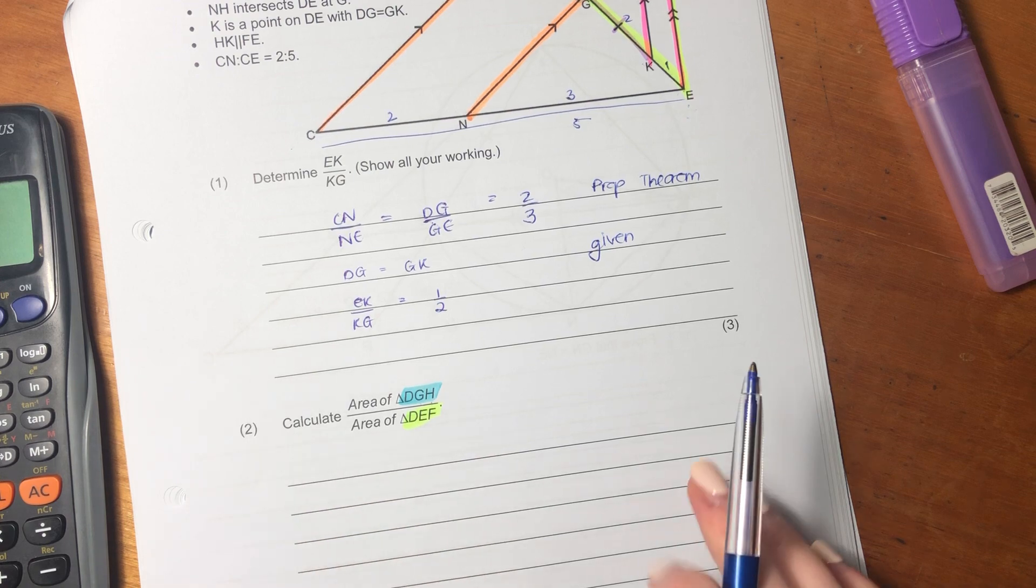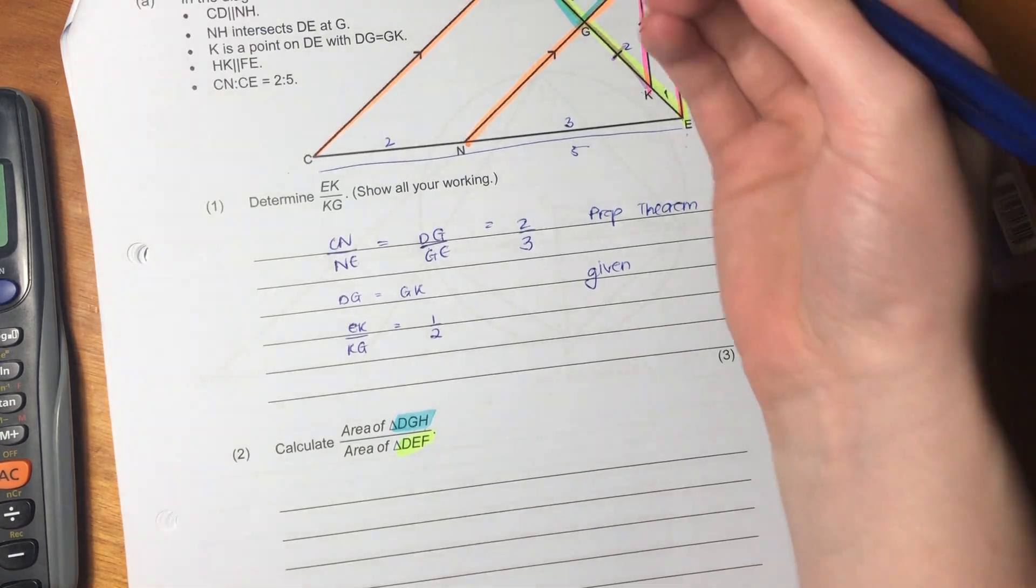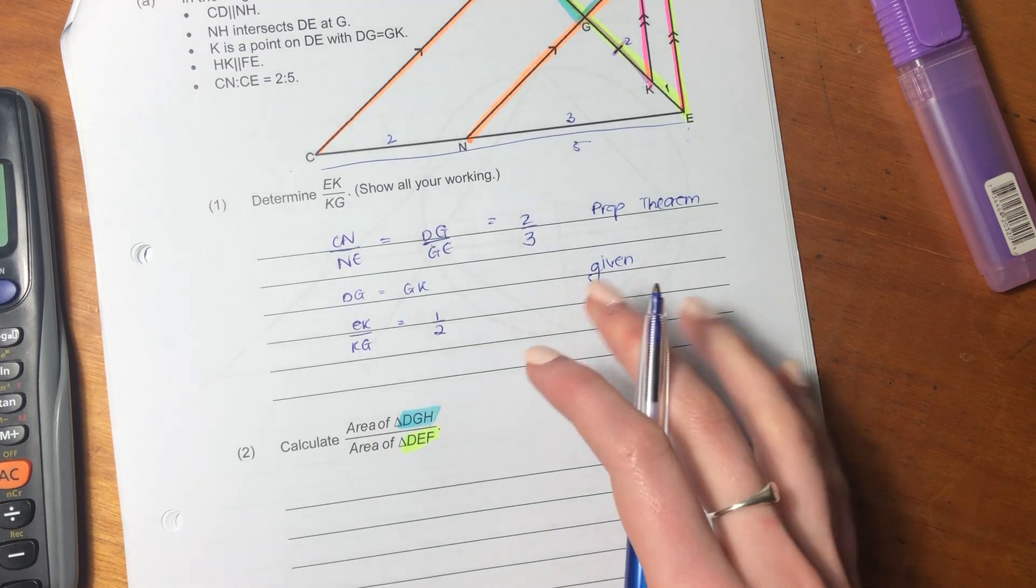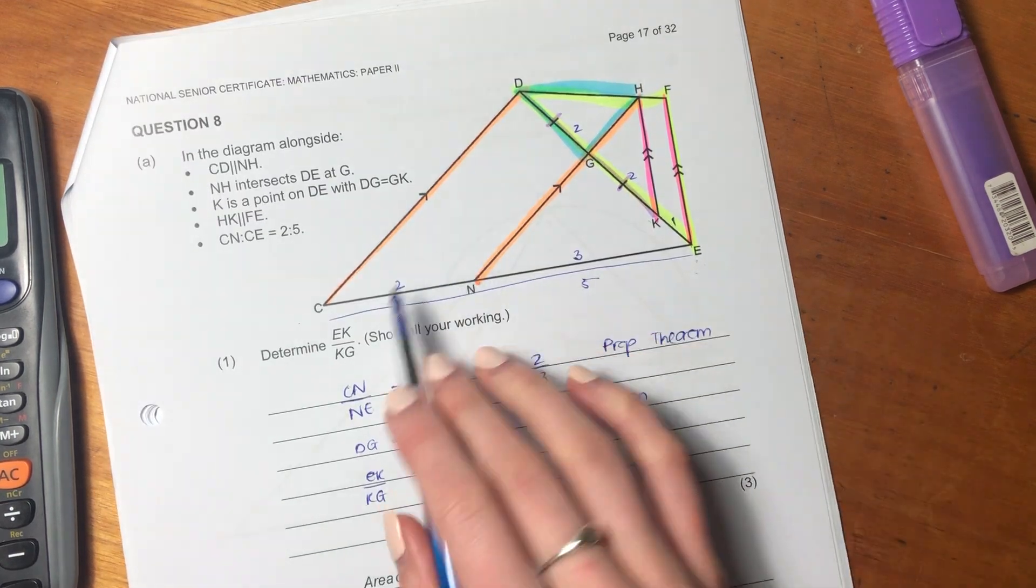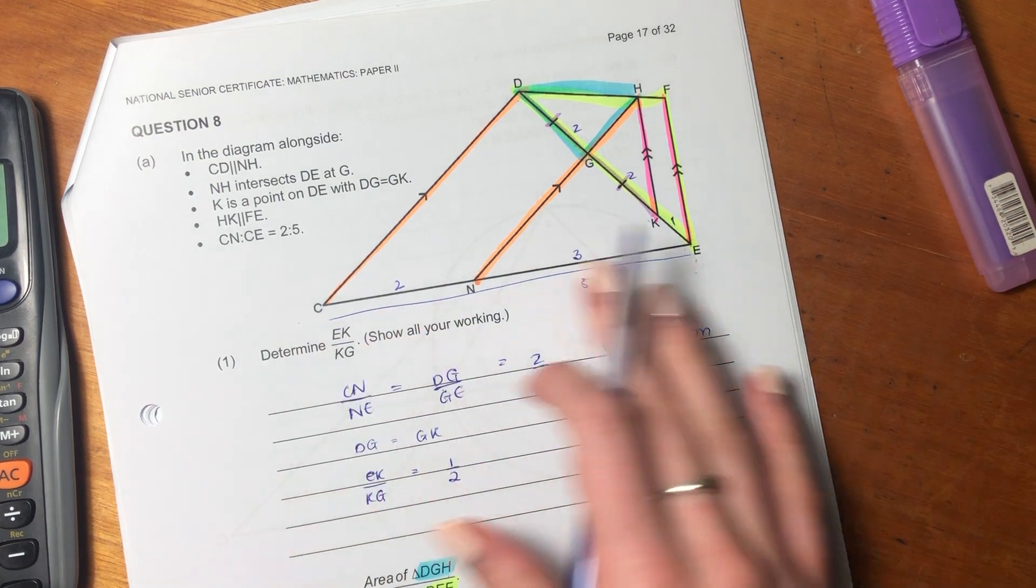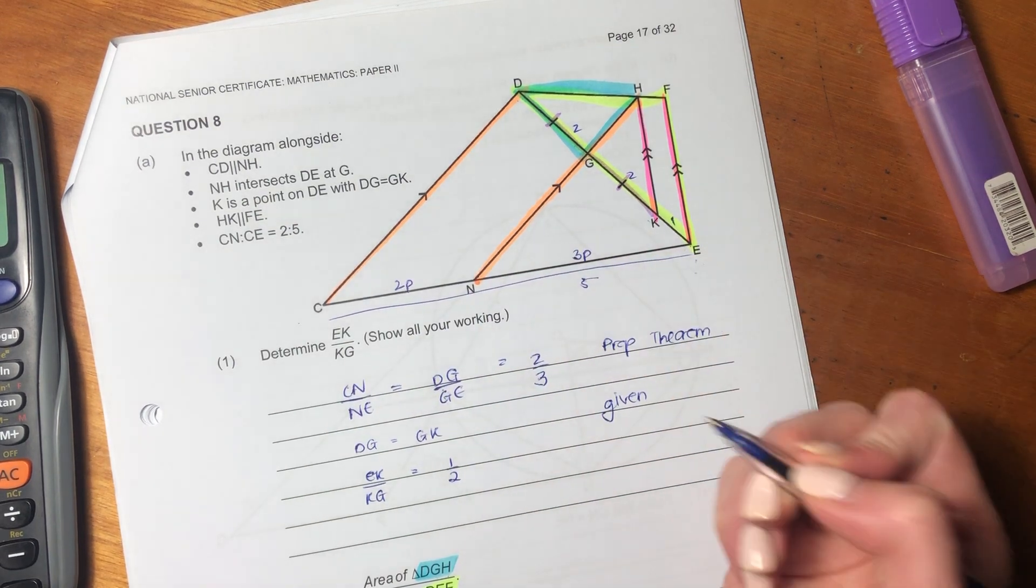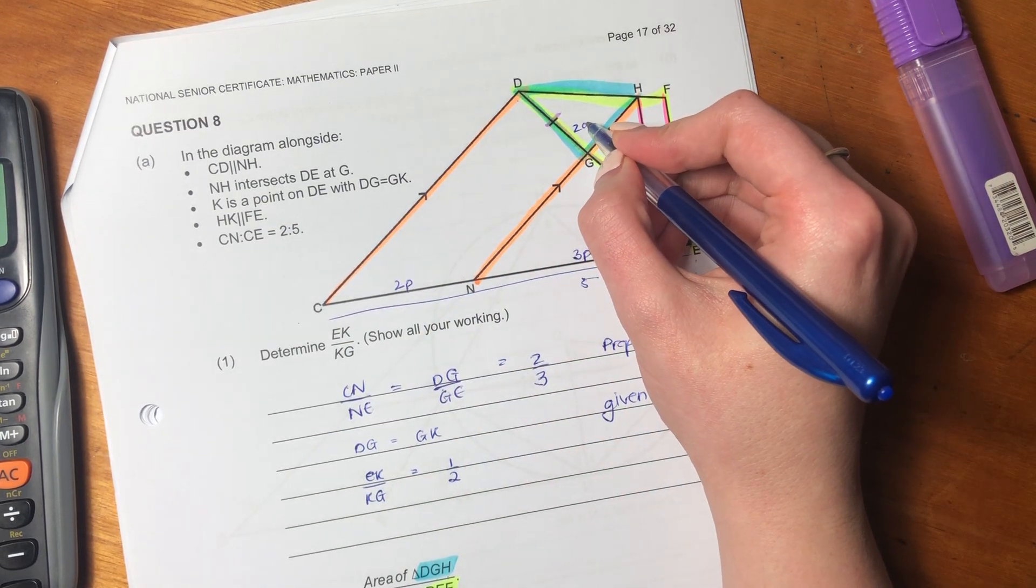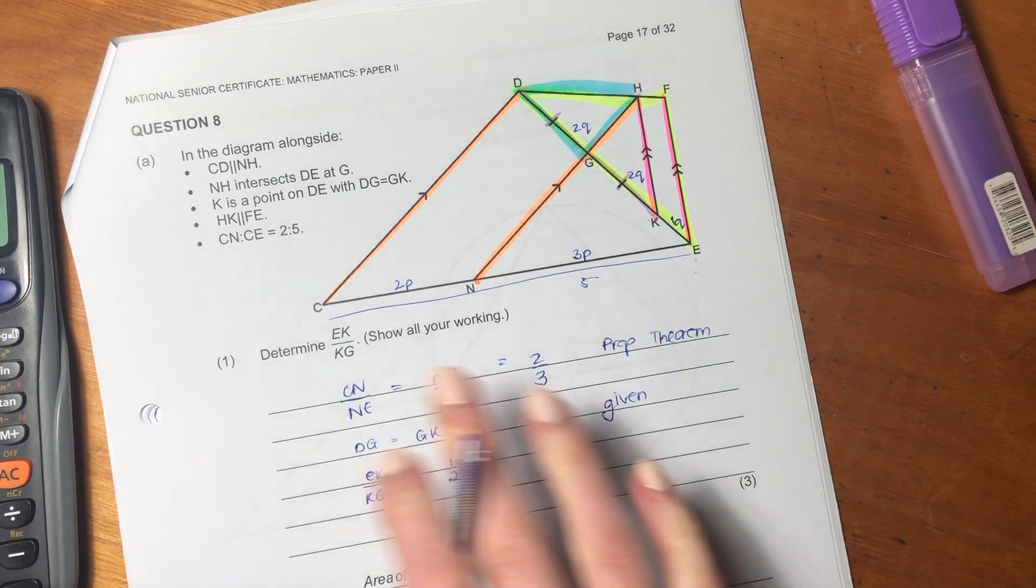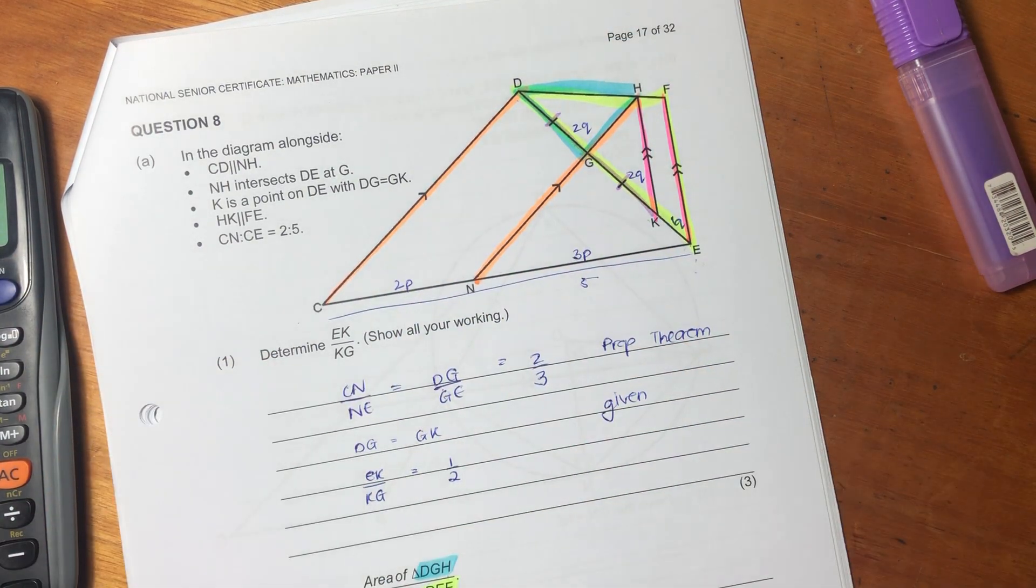But let's now think, because we have proportionality. So I just want us to put little variables in here because I want you to remember that just because it's 2 to 3 here and it's 2 to 3 here, it doesn't mean that they're all five units long. So I'm going to say this is 2P to 3P. This is, let's just call that 2Q, 2Q, 1Q. So it's still saying it's in the same ratio, but they're different lengths. The same ratio, different lengths.